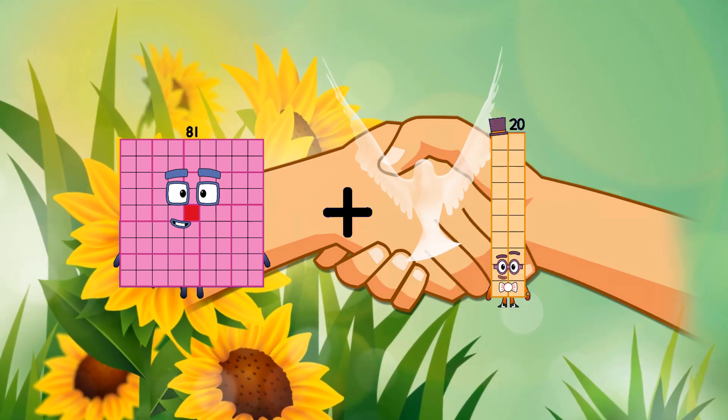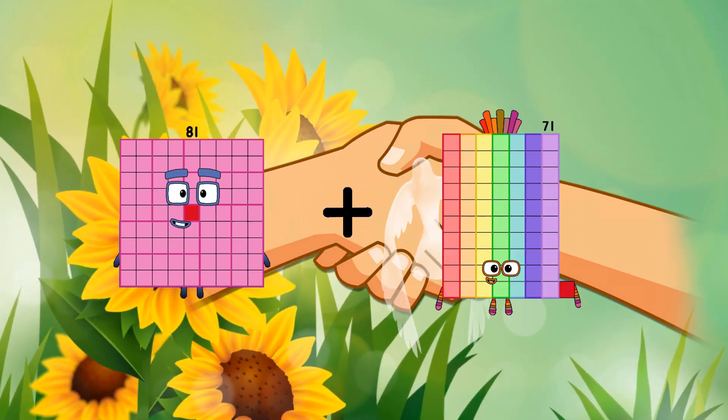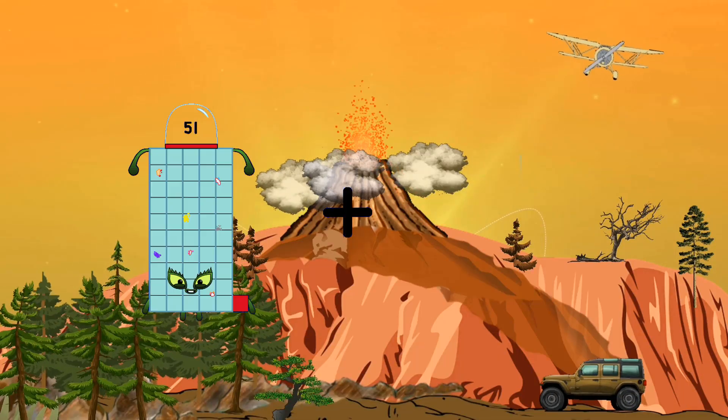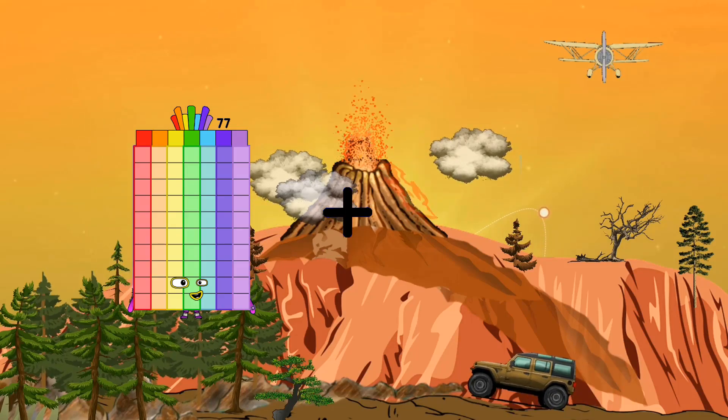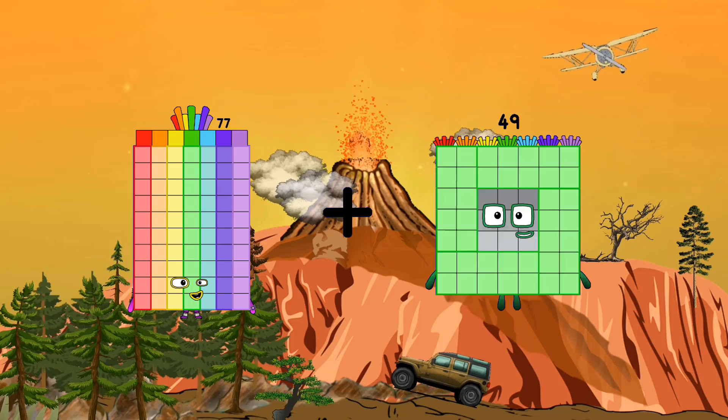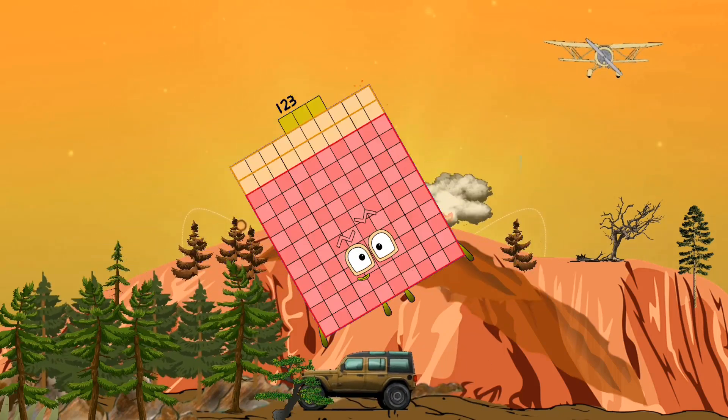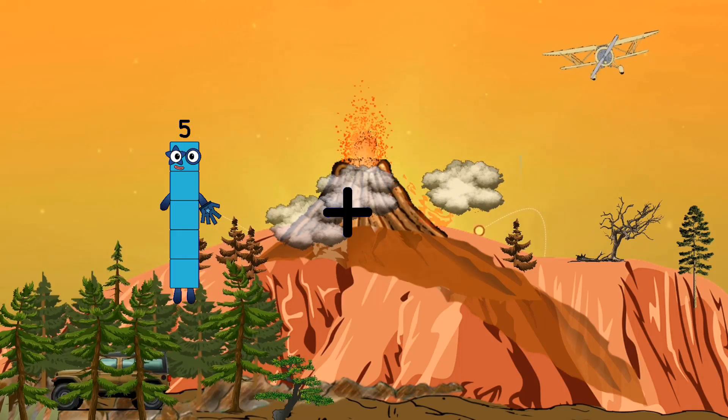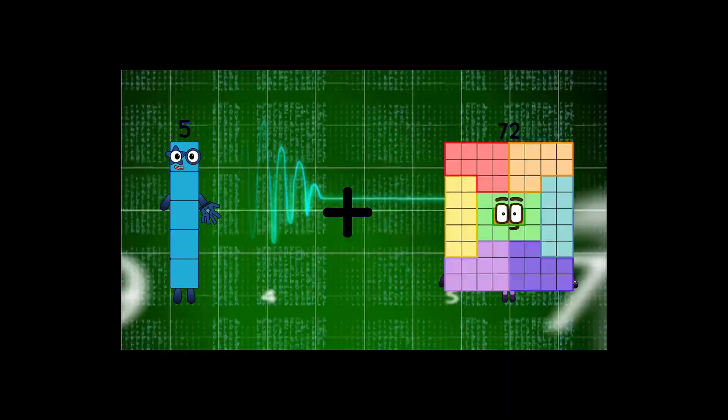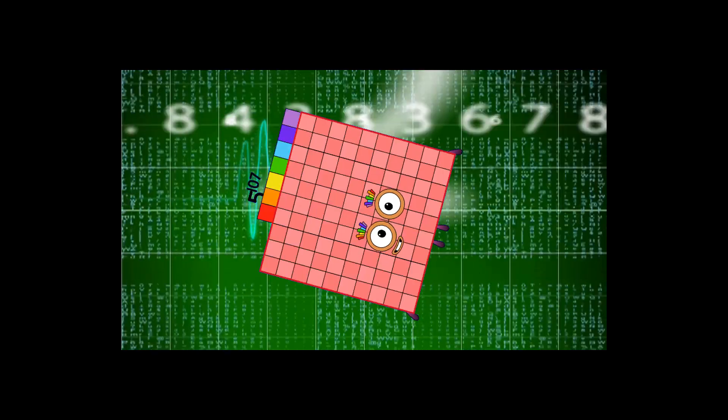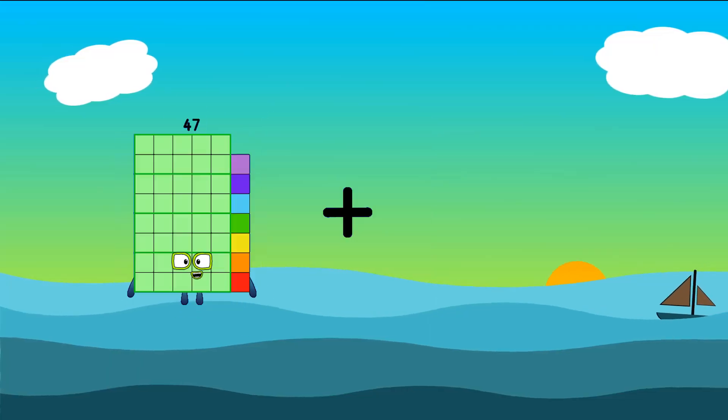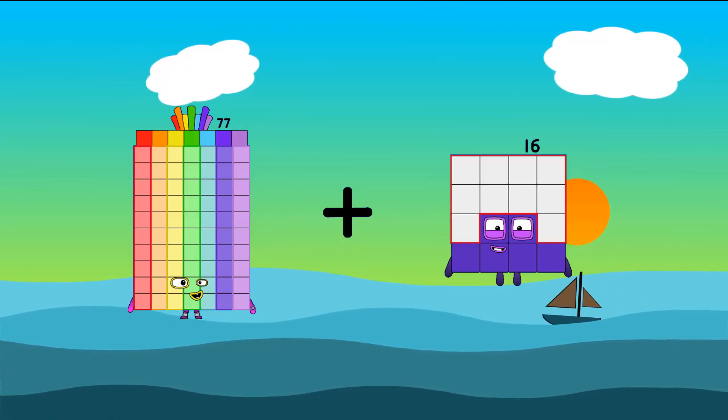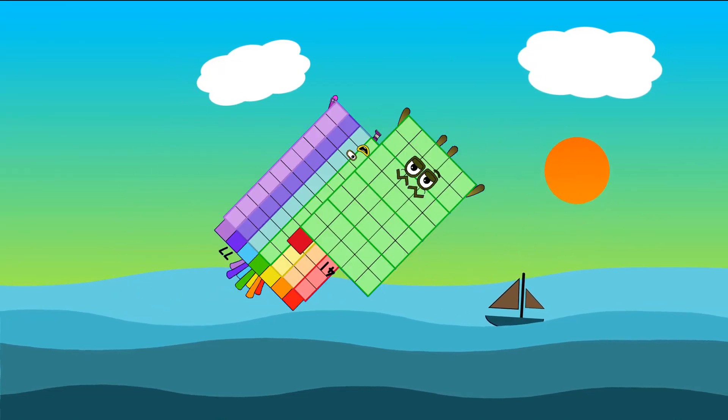81 plus 71 equals 152. 77 plus 46 equals 123. 5 plus 107 equals 112. 77 plus 41 equals 118.